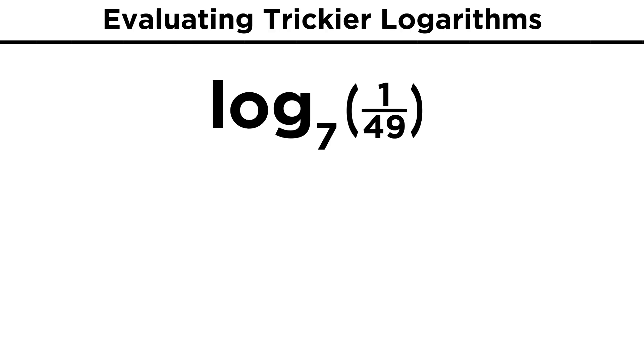Evaluating logs can sometimes seem a little tricky, but you just have to think critically. If you see something like log base seven of one over forty-nine, don't get tripped up, just think, raising seven by what power will give me one over forty-nine. This must be negative two, because seven to the negative two is the same as one over seven squared, which gives us one over forty-nine.